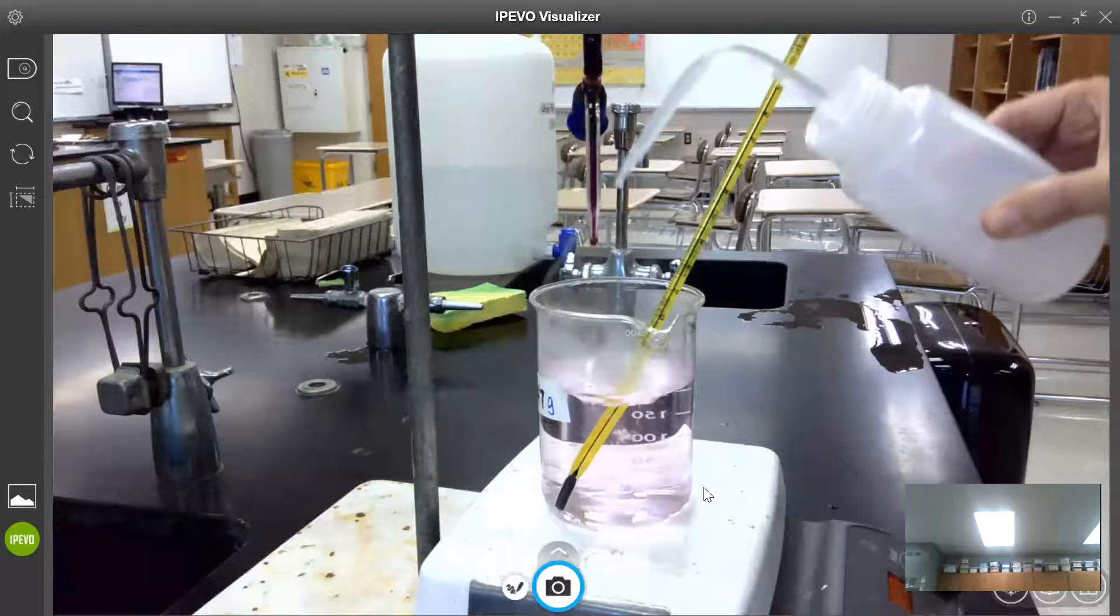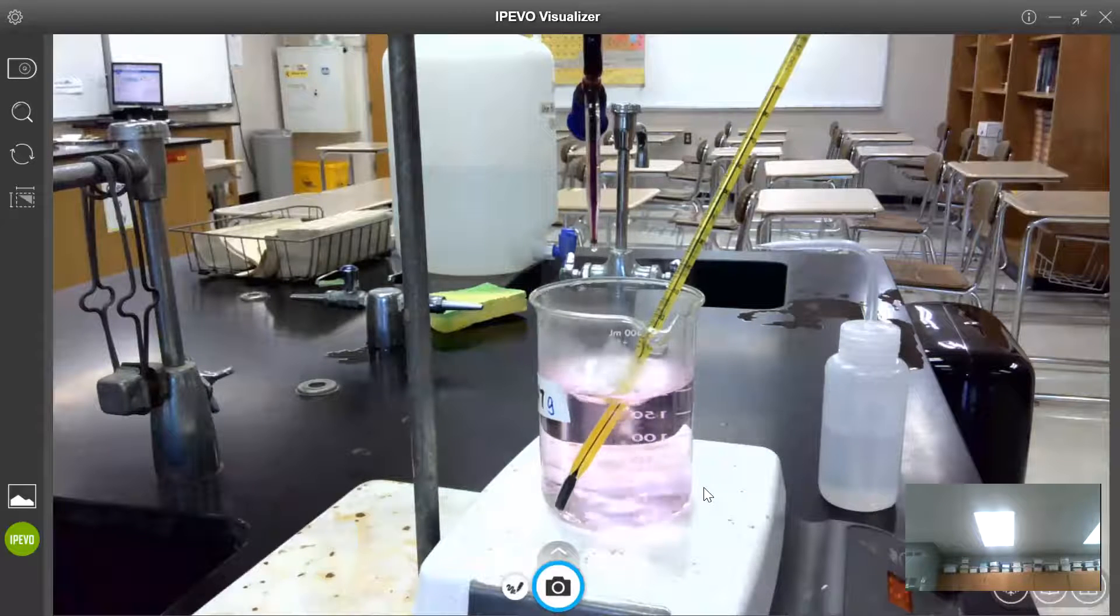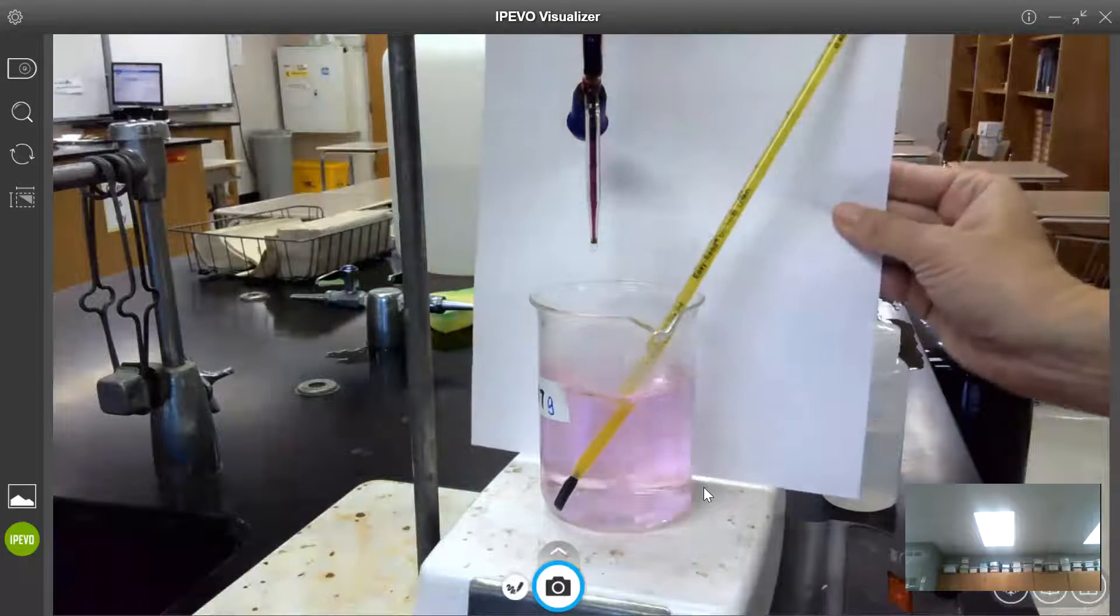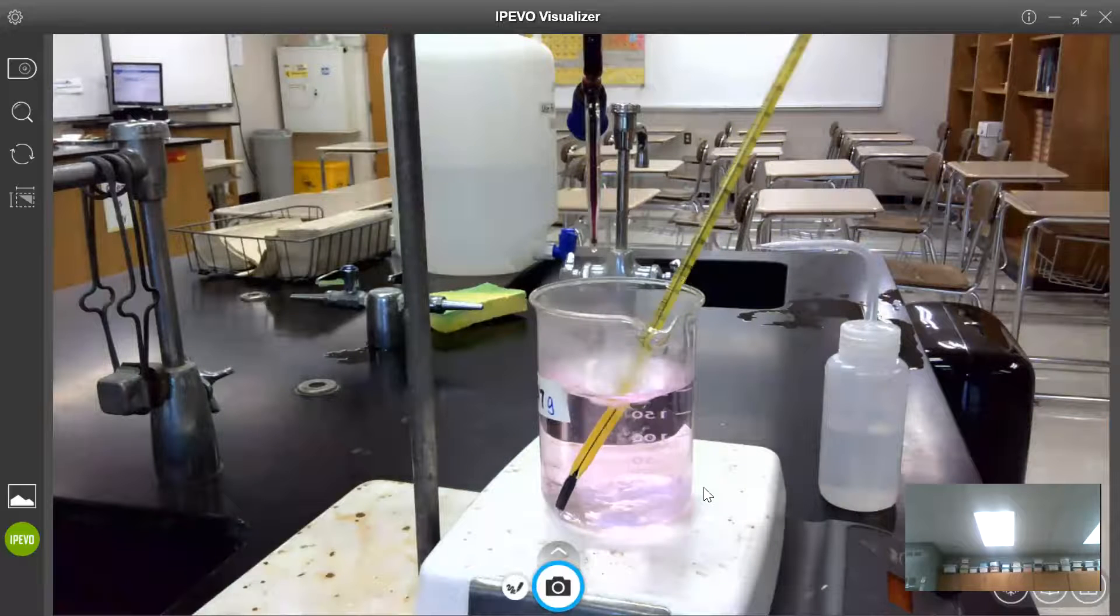And you can see we've achieved a pale pink color. I'm going to put a white background behind it so you can see that. And so that pale pink color tells me that I've reached the end point of my titration.